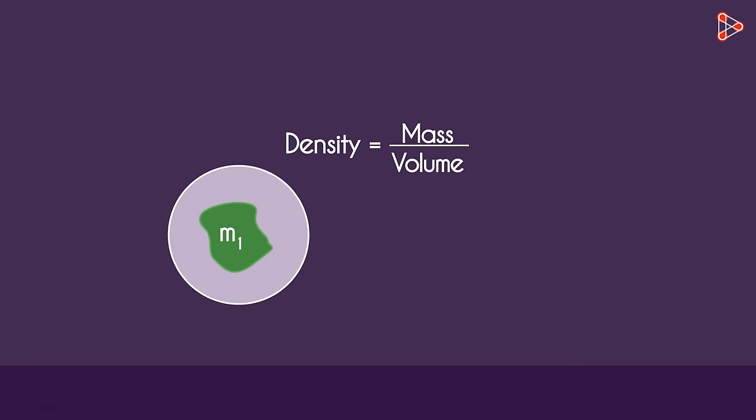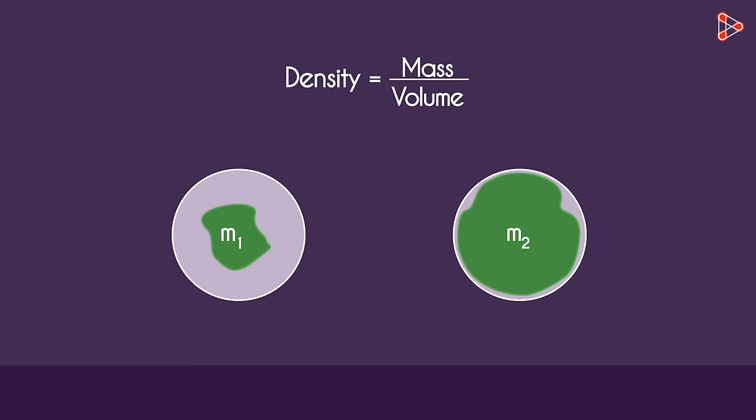In short, it tells us how much mass exists in a given volume. The unit of density is kilogram per meter cubed. Mass is in kilograms and volume in meter cubed.